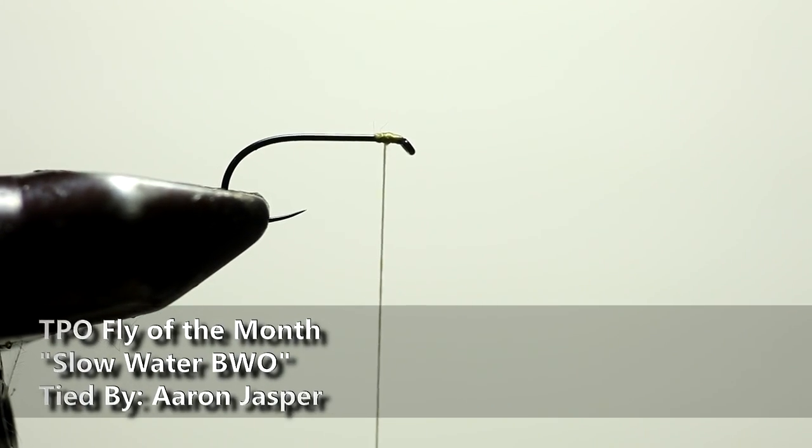Welcome to another TPO Fly of the Month. This month we're going to make a dry fly. This is a slow water bluing olive. You can tie it anywhere from a size 16 down to a 20.